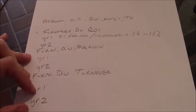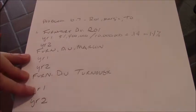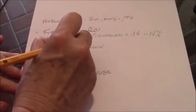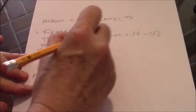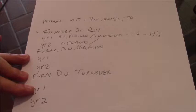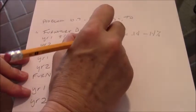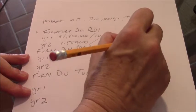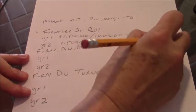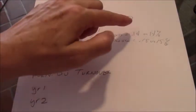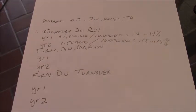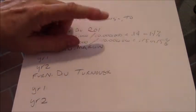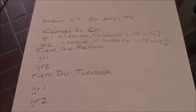In year two, our sales went up a little to 1,500,000. And we still had the exact same assets, 10 million. So now we're getting 0.15 or 15%. So we've improved our ROI over the year because we didn't increase our assets.